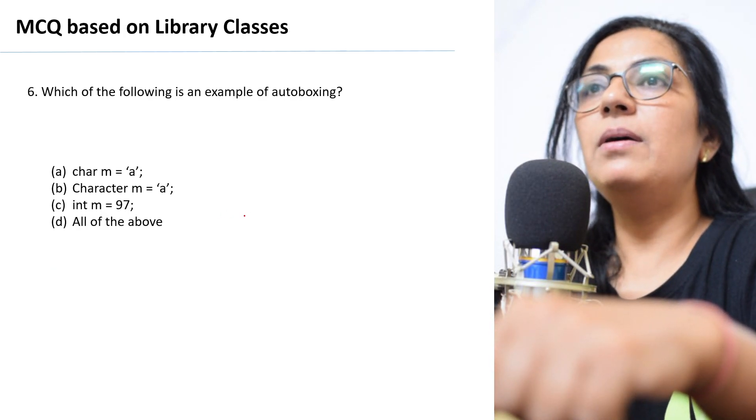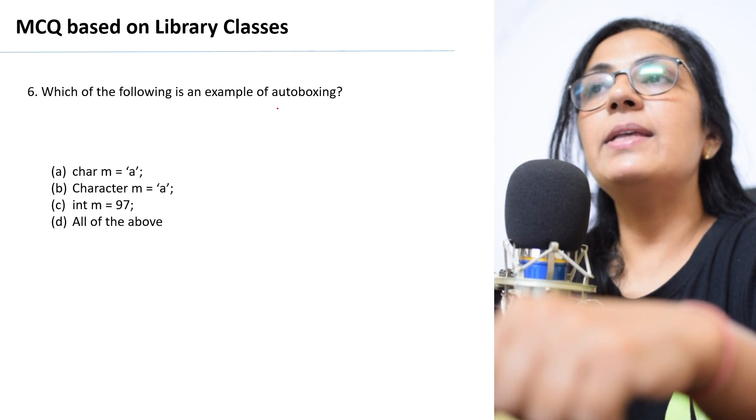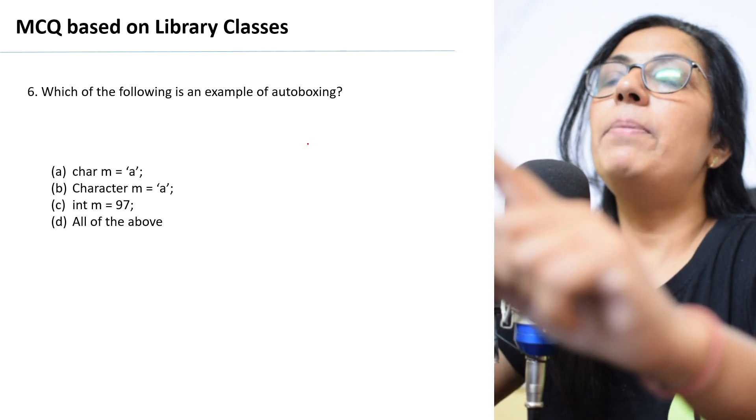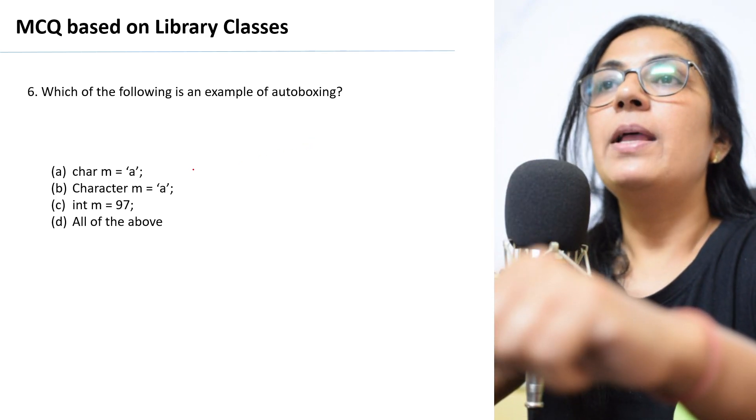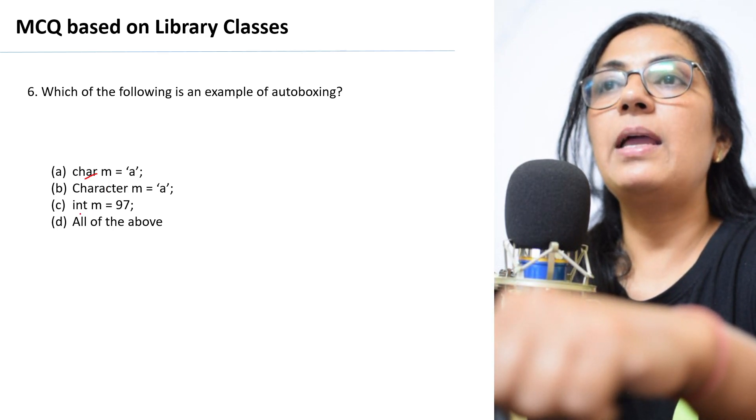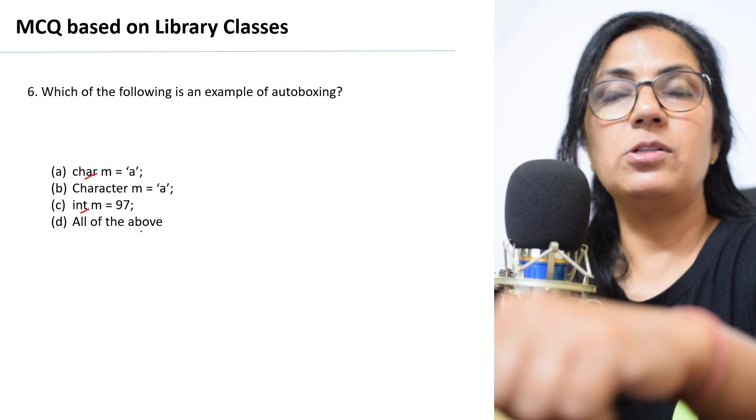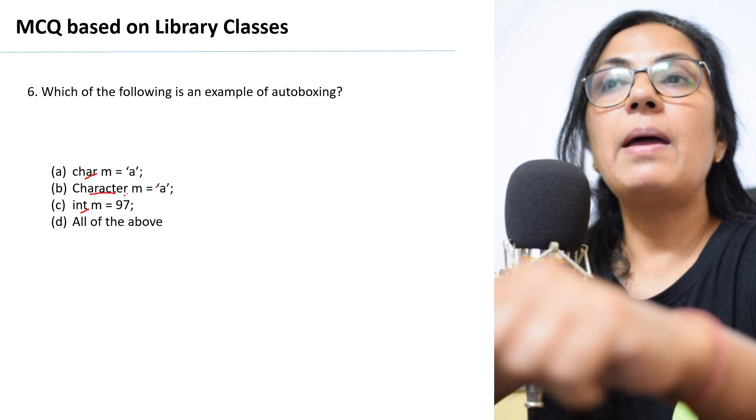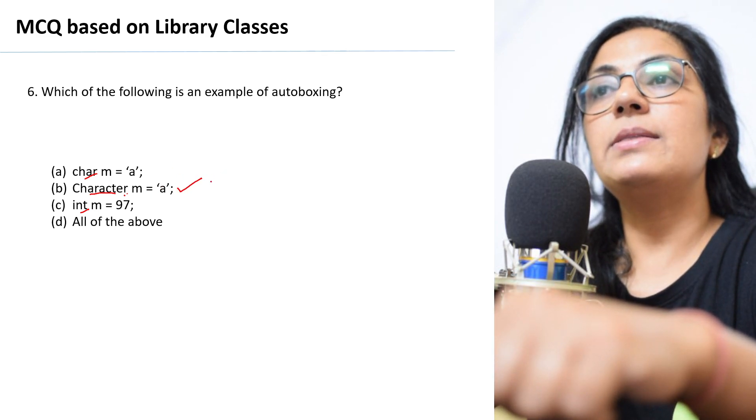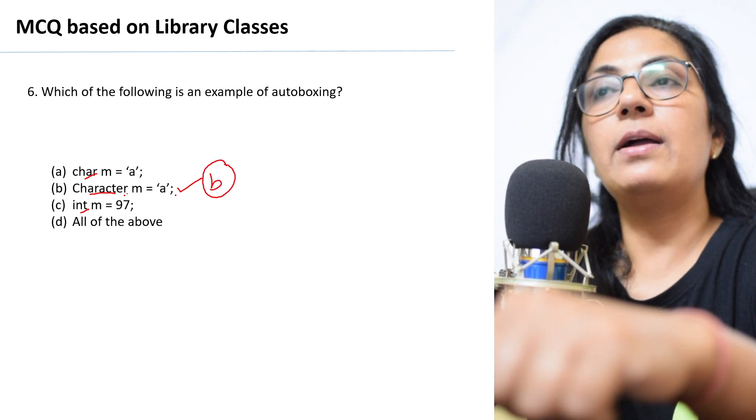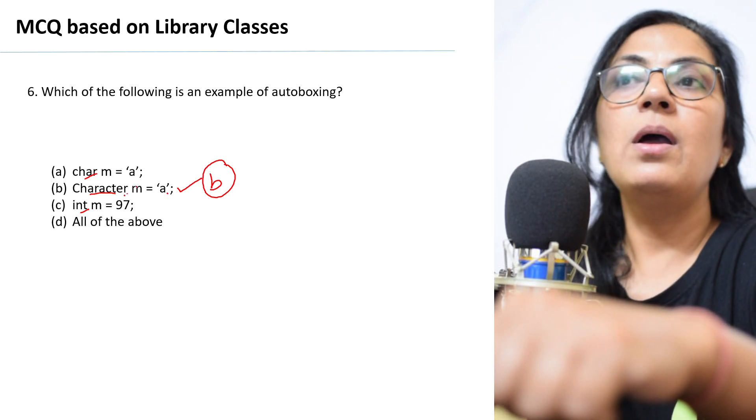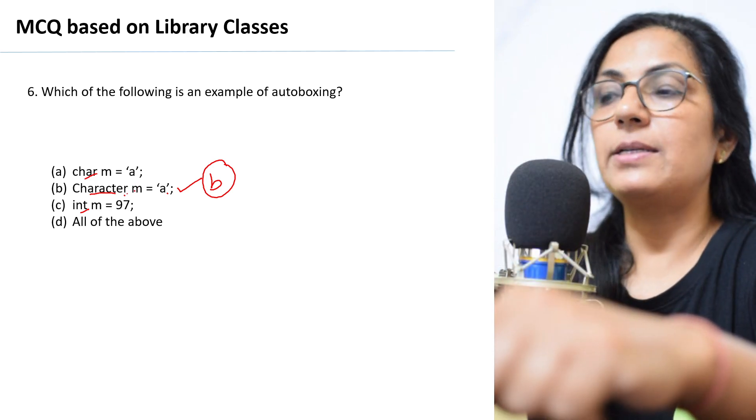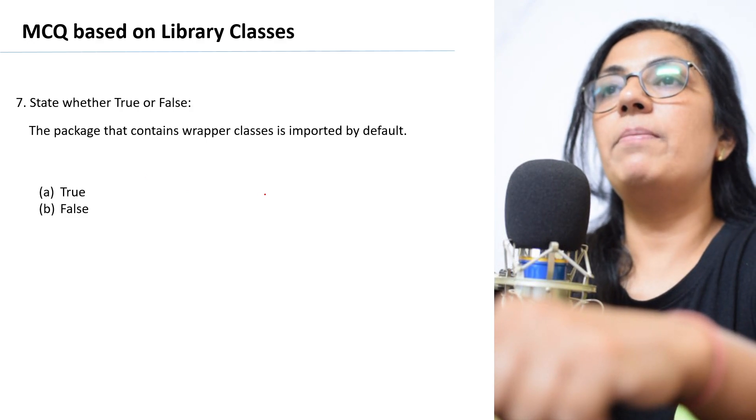We move on to question number 6. Which of the following is an example of autoboxing? Children, we just discussed autoboxing converts primitive to non-primitive. Here if you see, char is primitive data type, int is also primitive data type. Character is your wrapper class name. So this option is the correct option which will convert the single char into the character wrapper class, that is object of character wrapper class.